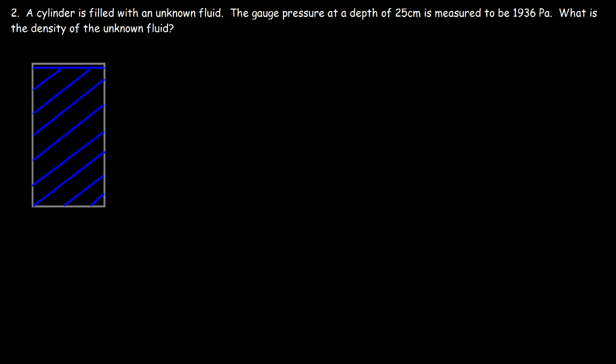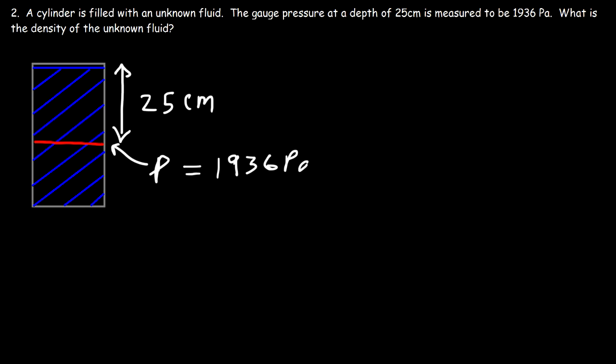Number two. A cylinder is filled with an unknown fluid. The gauge pressure at a depth of 25 centimeters is measured to be 1,936 Pa. Now keep in mind the gauge pressure is the pressure relative to the atmospheric pressure. So the total pressure at that point is 1,936 Pa plus 101,325 Pa due to the atmospheric pressure. But we don't have to worry about the atmospheric pressure. The gauge pressure is the difference between the absolute pressure, or total pressure, and the atmospheric pressure.